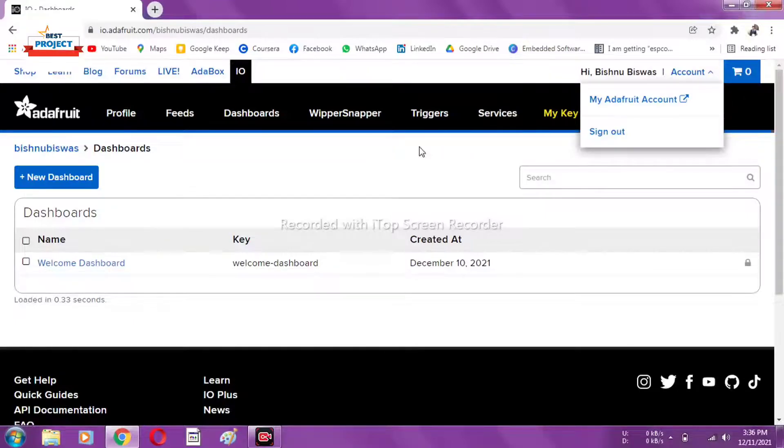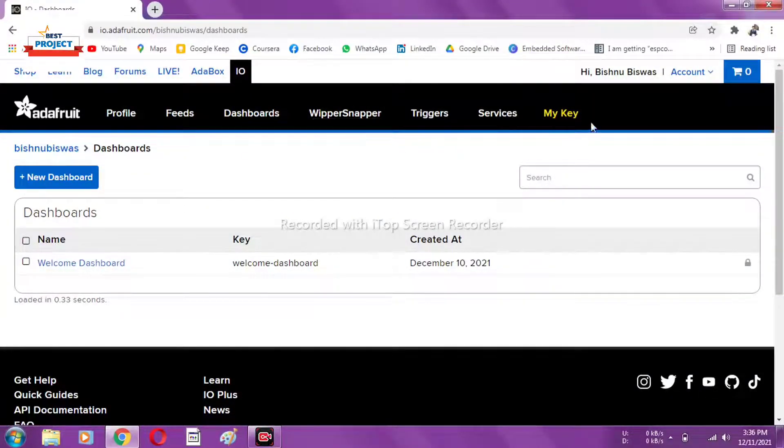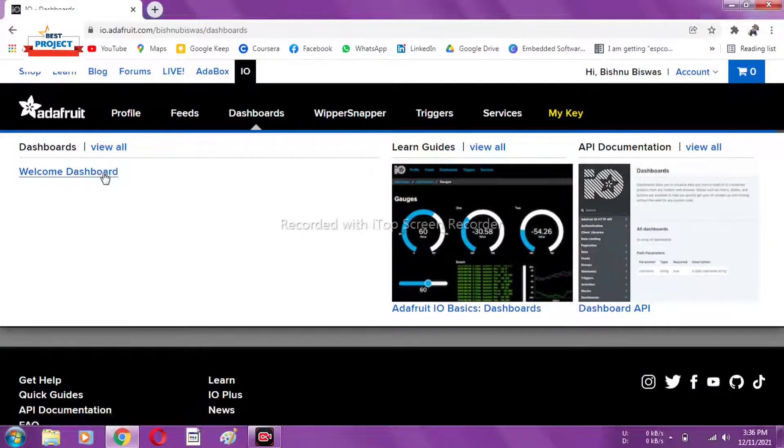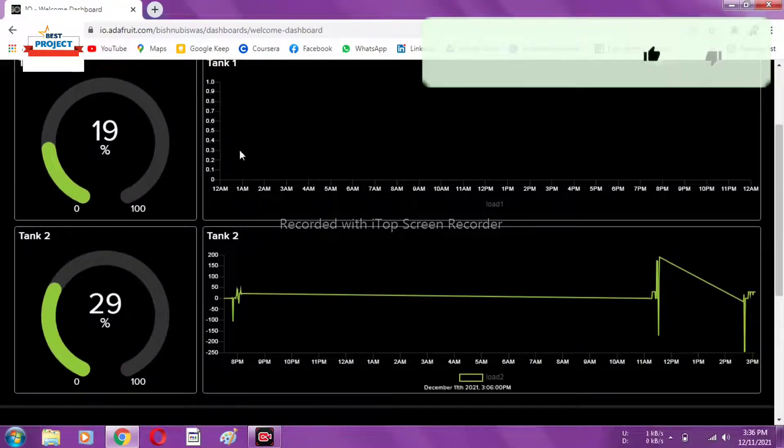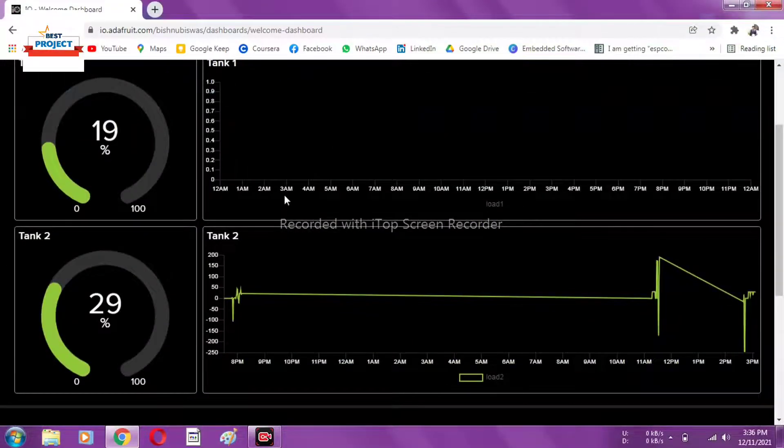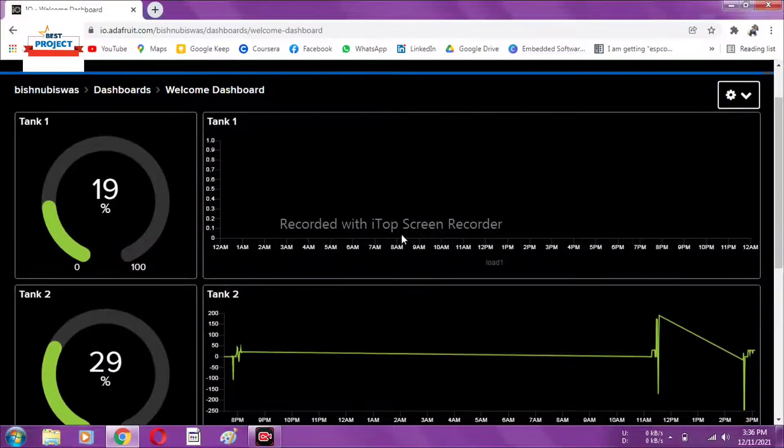We've visited the website. After visiting, you need to first login using your credentials, then click on the IO button, then click on the dashboard. After clicking on the dashboard, you'll see your project name here.